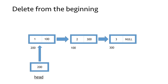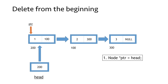Suppose this is the linked list given to us and we are required to delete the first node, that is the node containing value 1. For this we will first take a pointer ptr and equate it to head, so pointer ptr is now pointing to the node containing value 1, and we will use this pointer ptr to delete this first node.